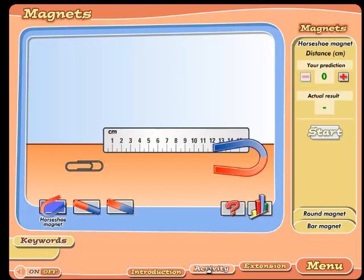Let's move to the activity. Can you predict which of these three magnets is strongest? The strongest magnet will be able to attract paper clips from the longest distance. Click on a magnet to select the one you wish to test.